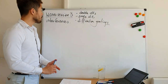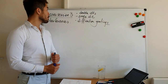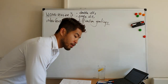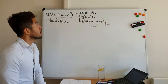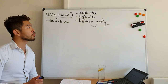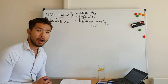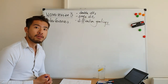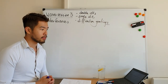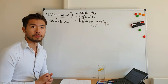Hi, welcome back to WAVE Revision. This is number three. Today we're going to talk about interference. There are three types of interference questions: double-slit, single-slit, and diffraction grating. If you want to know how interference happens, it happens because of path and phase differences, and obviously superposition.